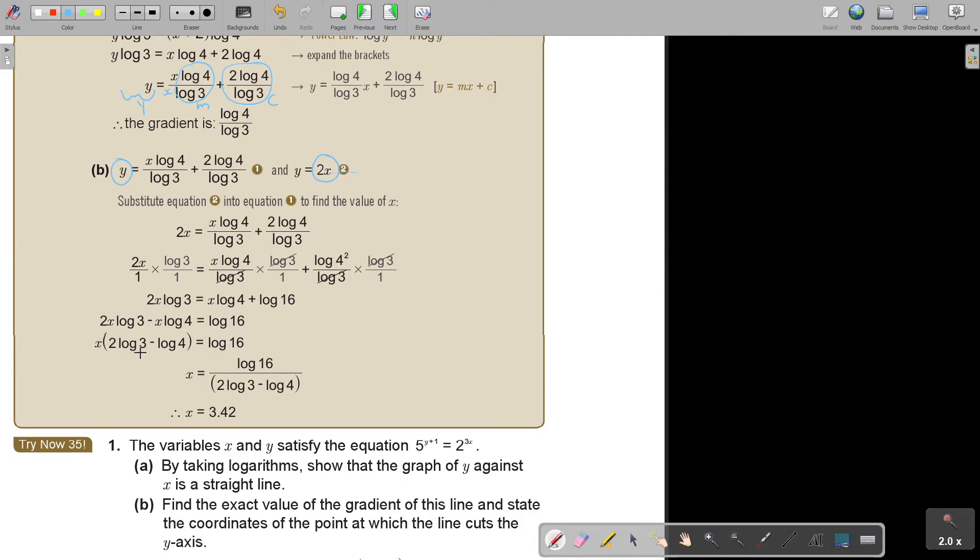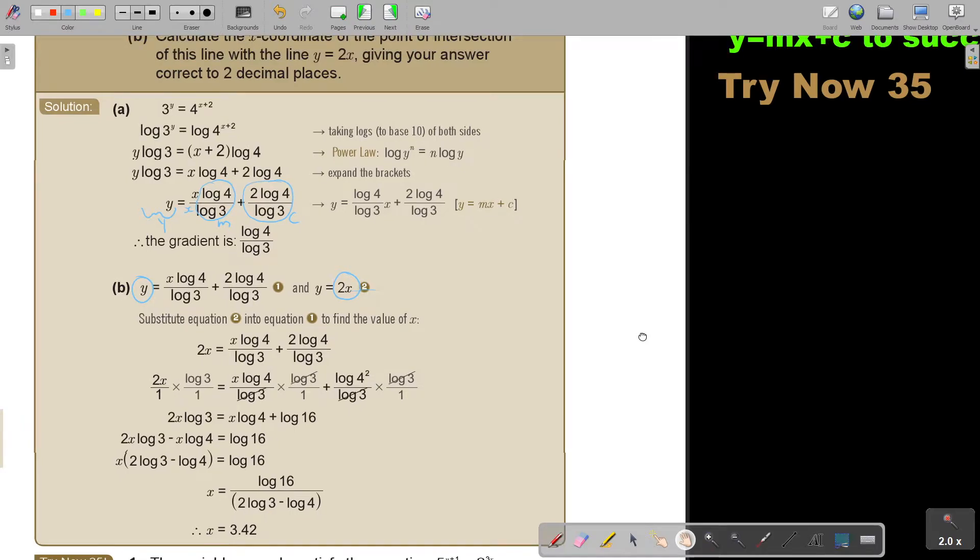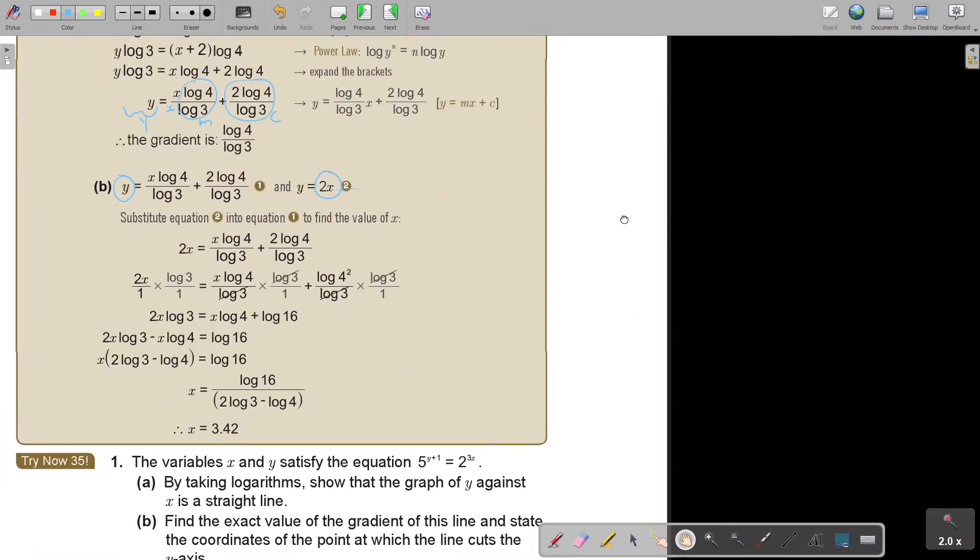So because then, I'm basically, I can even simplify this, but it's not necessary. So it's log 16 divided by this, and I get 3.42. I just want to see if they sit correct to something, correct to two decimal places.